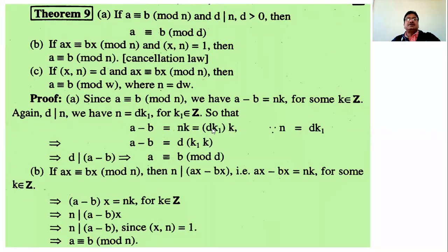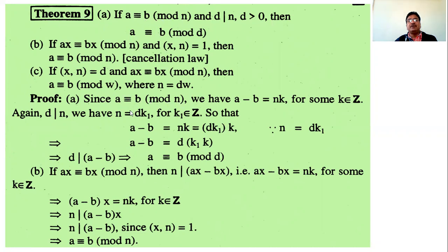Next theorem on the congruence relation: if a is congruent to b modulo n, and d divides n where d is greater than 0, then show that a is congruent to b modulo d. Given a is congruent to b modulo n, the meaning is that n divides a minus b.